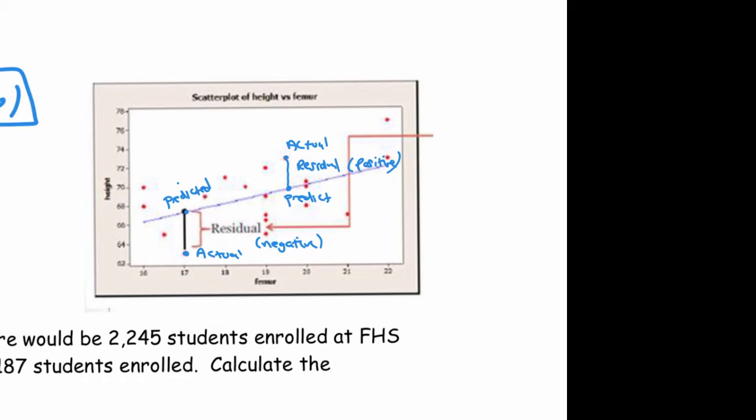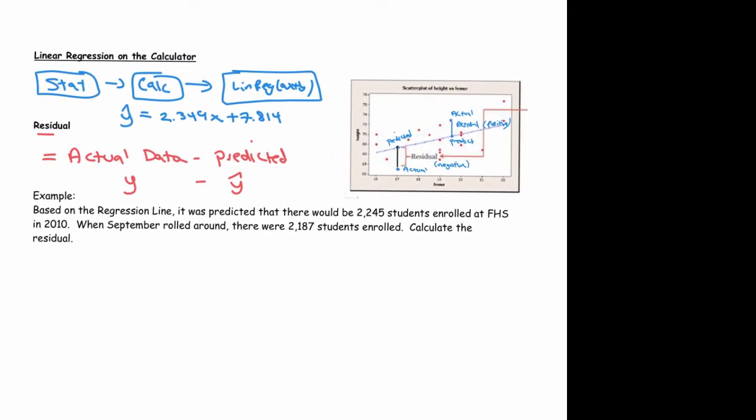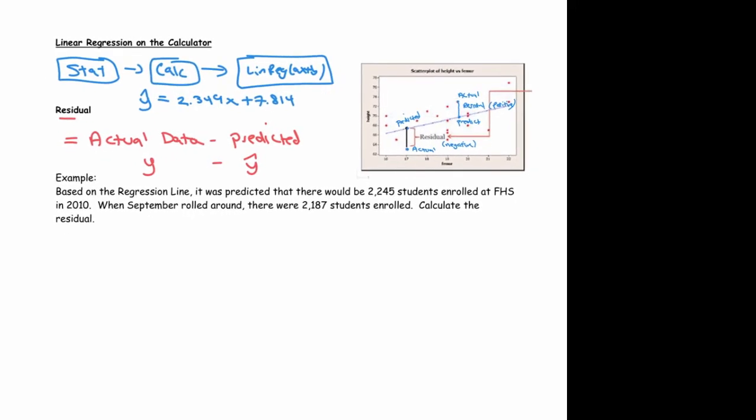As a quick example: based on the regression line, it was predicted that there would be 2,245 students enrolled at FHS in 2010. When September rolled around there were actually 2,187 students. Calculate the residual.